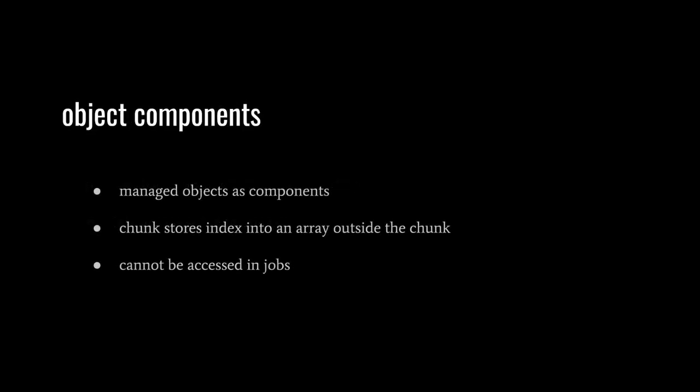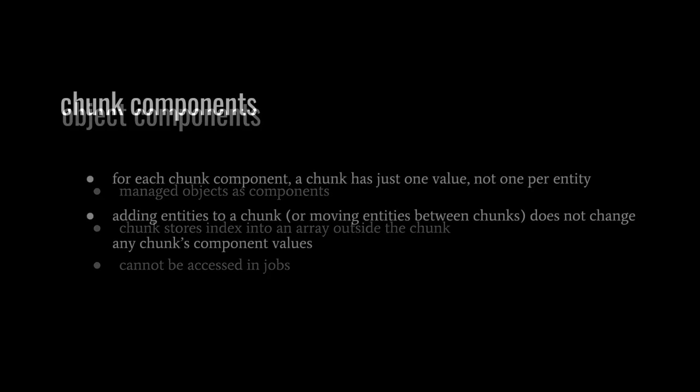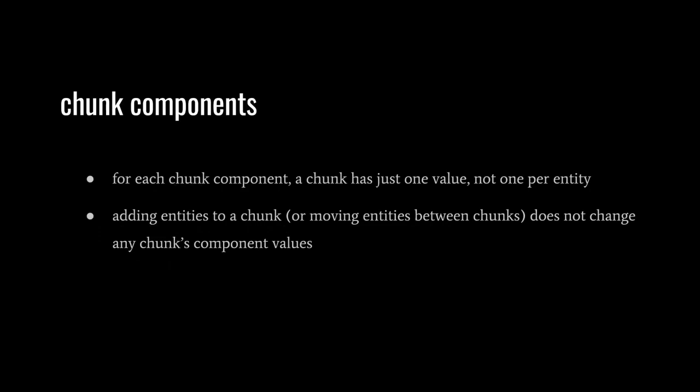An object component is a special kind of component that is a managed object. These components are not stored in the chunks but rather in external arrays, referenced by index. Because these objects are managed, they cannot be accessed in jobs. While sometimes convenient, object components are not cache-friendly, and using too many defeats the purpose of ECS. A chunk component belongs to a chunk itself, not any individual entity. When entities are added or moved between chunks, no chunk component values are affected. A culling system, for example, might store a chunk component as an axis-aligned bounding box encompassing all entities within the chunk.